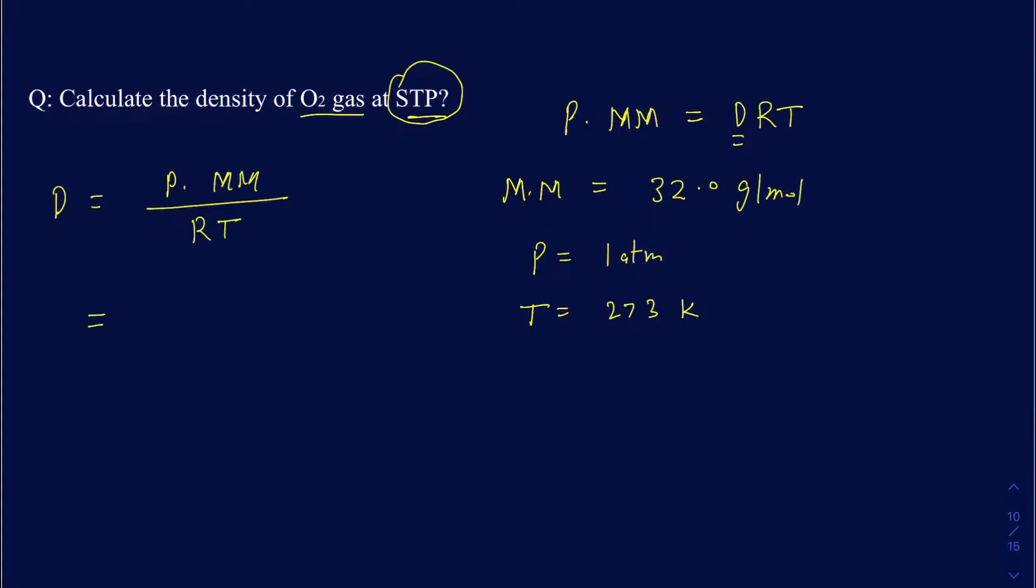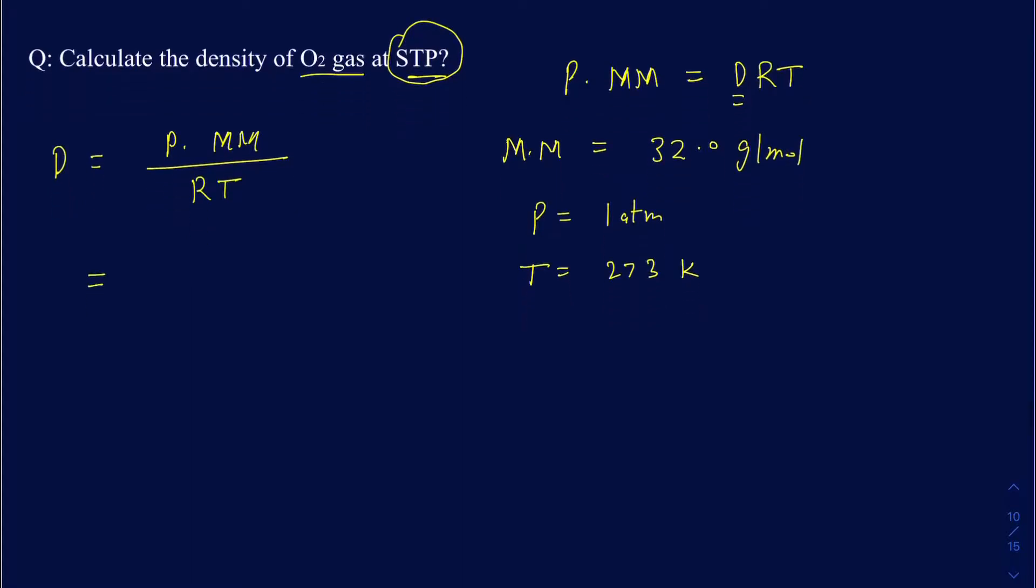I know everything now, so the pressure is 1 atmosphere. Your molar mass is going to be 32.0 grams per mole, and you want to divide that by the R, which is going to be 0.0821 atmosphere liters per mole Kelvin, and then times your temperature, which is going to be 273 Kelvin.